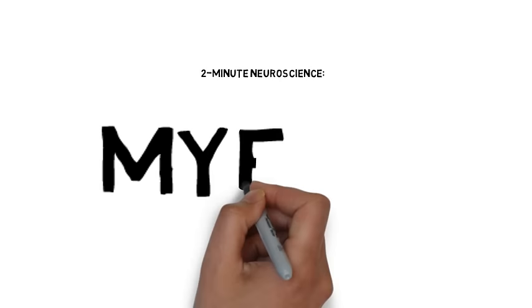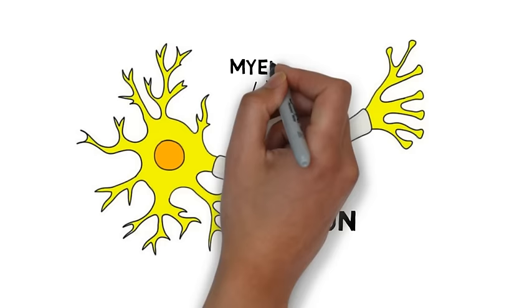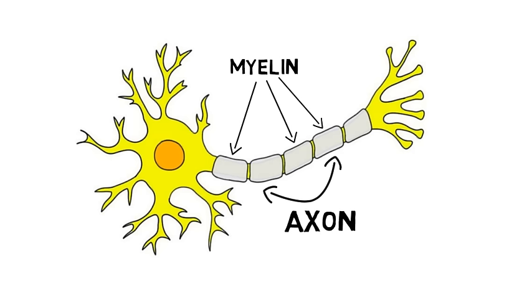Myelin is an insulating layer that surrounds the axons of neurons. Composed primarily of lipids, myelin helps to prevent action potentials, which are the electrical signals that travel along axons, from decaying due to electrical current leaking out through the axonal membrane. Myelinated axons thus conduct action potentials more quickly and efficiently than unmyelinated axons, and because of this, many neurons in the nervous system are myelinated.